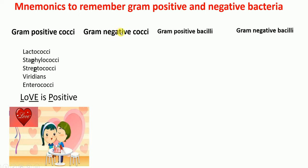Now let's talk about gram-negative cocci. In this list we have Neisseria. If you look closely at the name of this bacteria, 'N-E' refers to negative — it's a gram-negative cocci. And to differentiate whether it's a cocci or bacilli, the name Neisseria has a double S, and cocci has a double C.